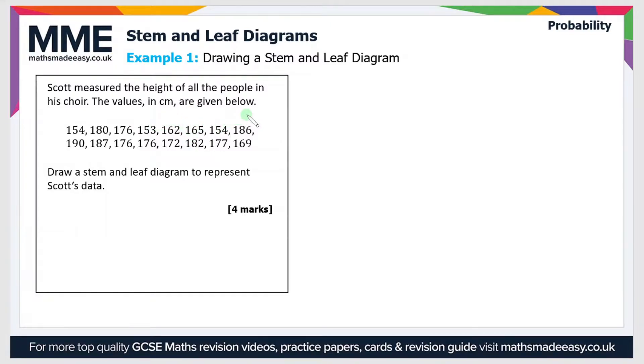So let's just run through them. Scott measured the height of all the people in his choir. The values in centimeters are given below. Draw a stem and leaf diagram to represent Scott's data. Well first things first, the structure of the diagram should be like this: you have on the left hand side the stem and on the right hand side is the leaf.